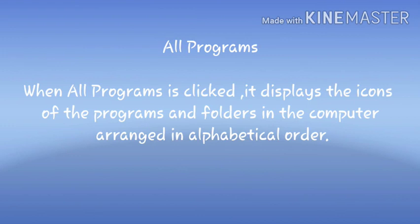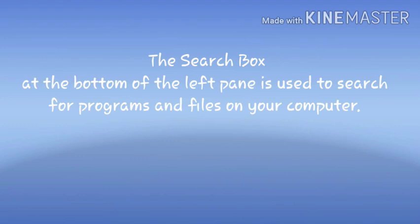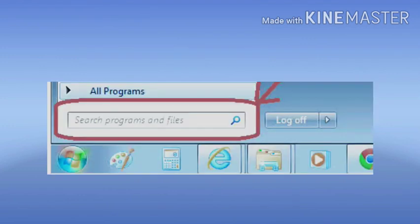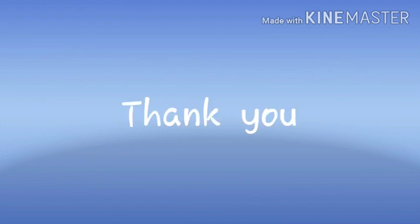The search box at the bottom of the left pane is used to search for programs and files on your computer. You can also drag and drop icons or folders from the desktop to the taskbar. This will let you see the desktop icons when you are working on another program. Students, we will do till the search box.